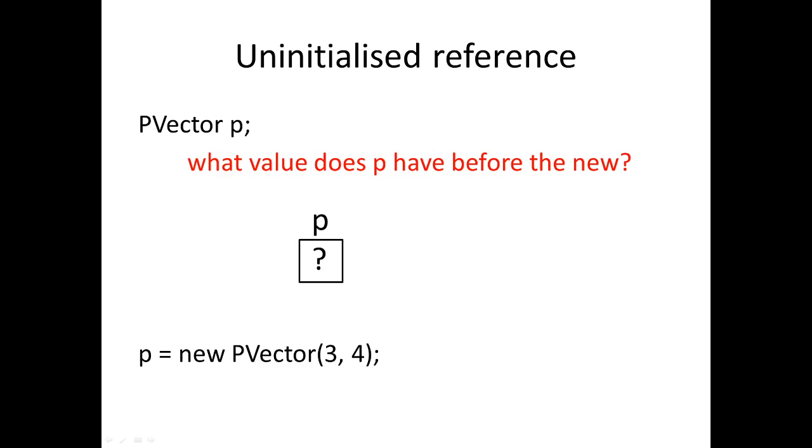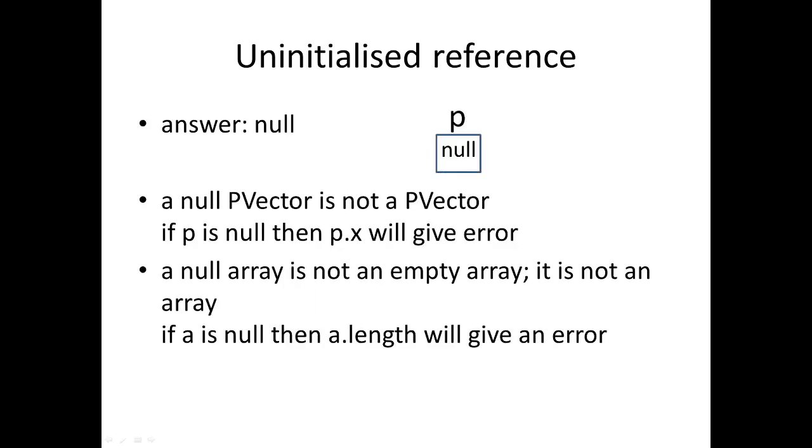Another thing we should cover with references is that we've seen we can write PVector p equals new PVector(3, 4) all in one line, but often we don't want to do it in one line for some reason. But we ask: after we've done the first line, what value does p have? It does have a default value of null.